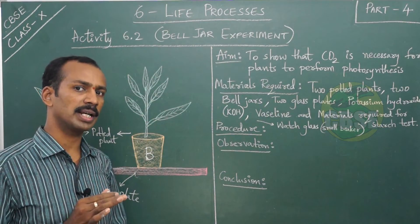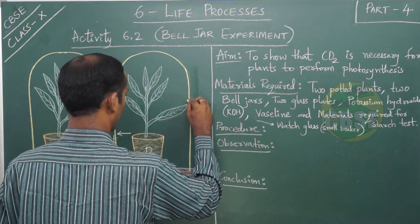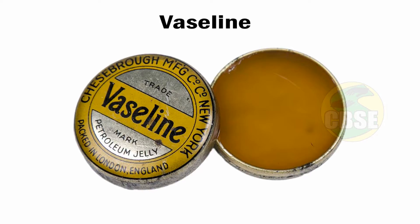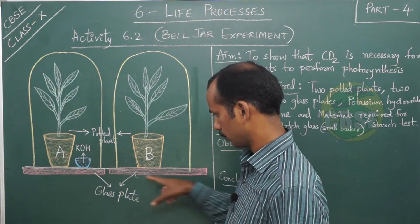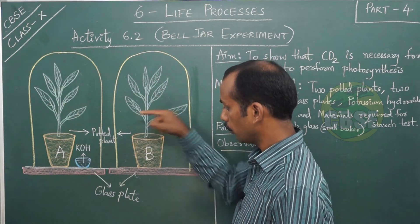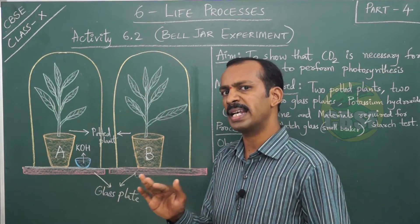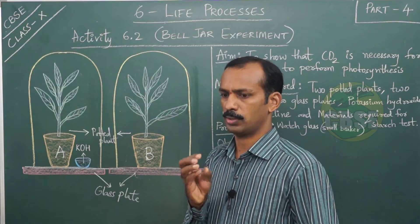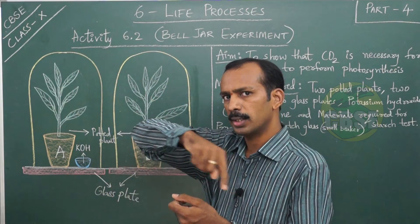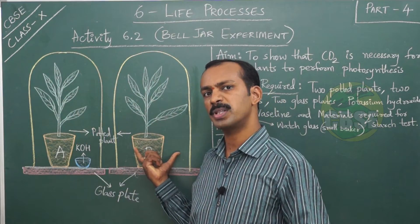We are covering bell jars on both the potted plants — bell jar A and bell jar B. We placed a glass plate under each potted plant. Between the bell jar and the glass plate there should not be any gap. A slight gap could allow air to enter or exit, so to fill that gap we are sealing the base of the bell jar with vaseline.